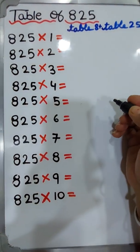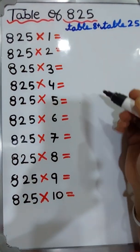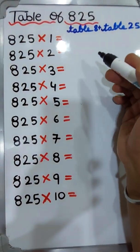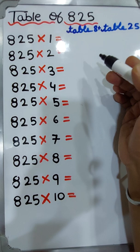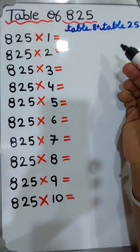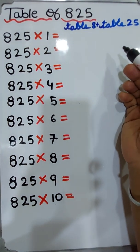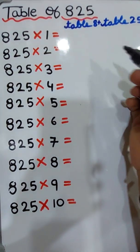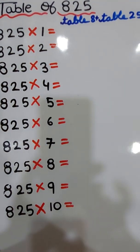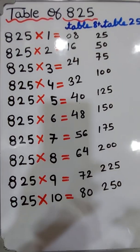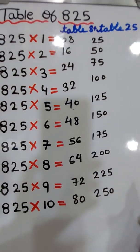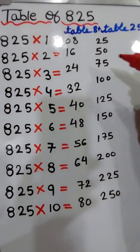For the table of 825, first write the table of 800 and then write the table of 25, then add them.